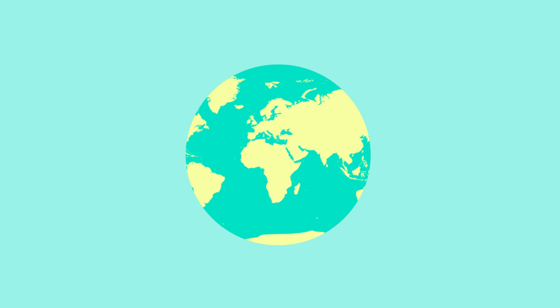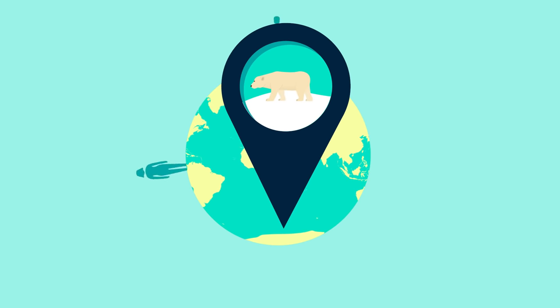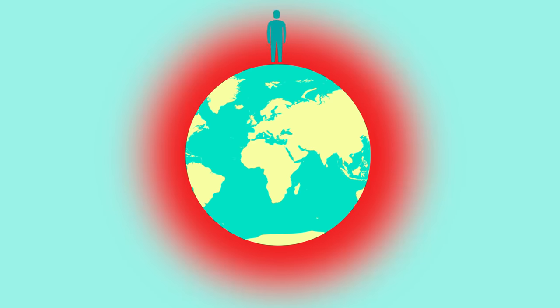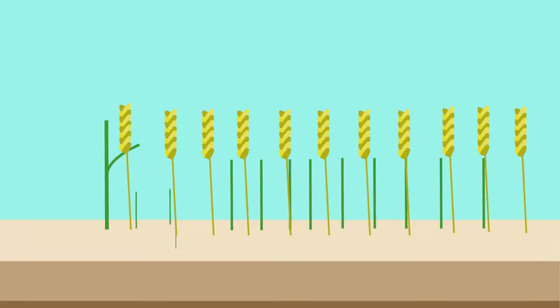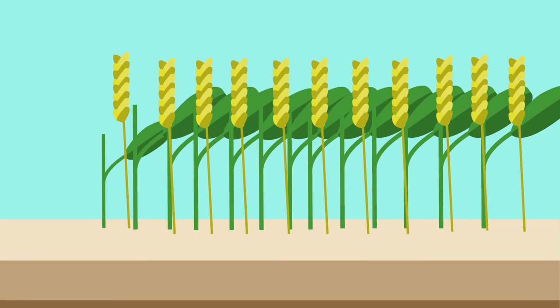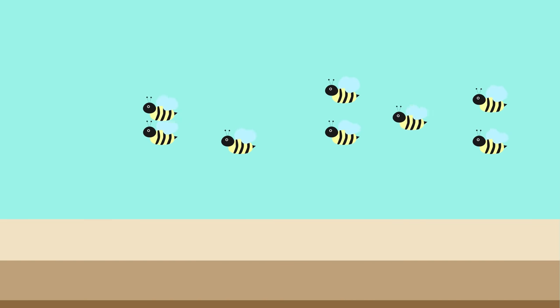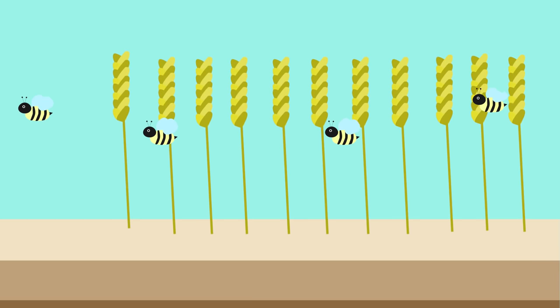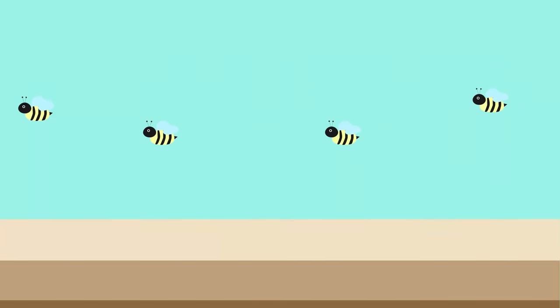The loss of biodiversity could have catastrophic effects on our society and even result in the loss of our food crops. For example, bees are in huge decline and they are extremely important in the pollination of many plants, including our crops.